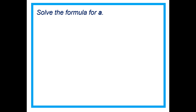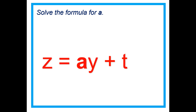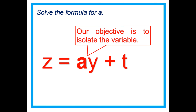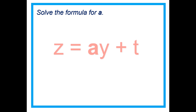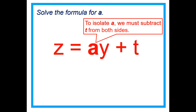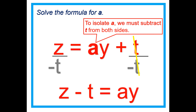Let's solve the formula for A. Again, Z equals AY plus T. Our objective is to isolate the variable A. To isolate A, we must subtract T from both sides — minus T on both sides. That cancels T, giving us Z minus T equals AY.